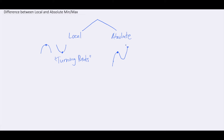Think of absolute maximums as the highest point of the graph, no matter where it is. Similarly, for absolute minimums, the absolute minimum is just the lowest point on the graph — wherever that lowest point is, even if it's an end point, that is considered the absolute minimum. As you can see with this cubic shape, you can already distinguish the differences between a local and an absolute minimum or maximum.